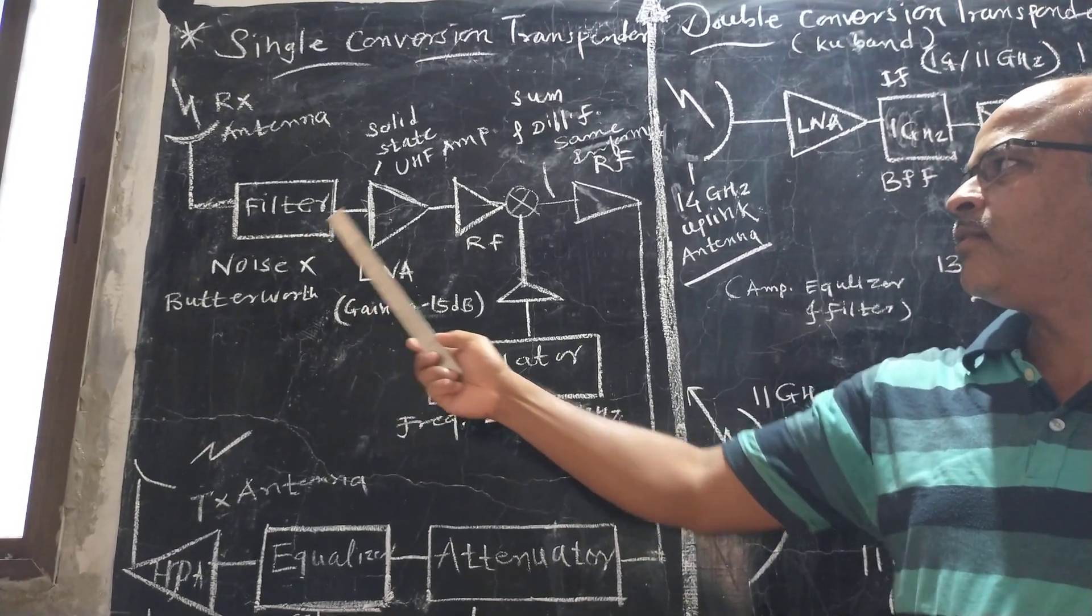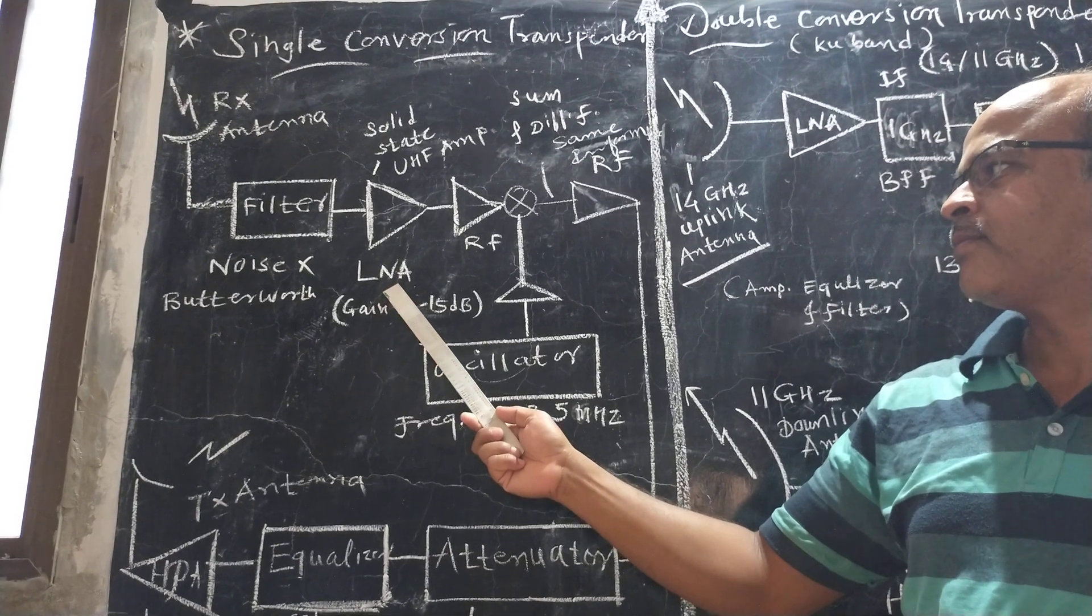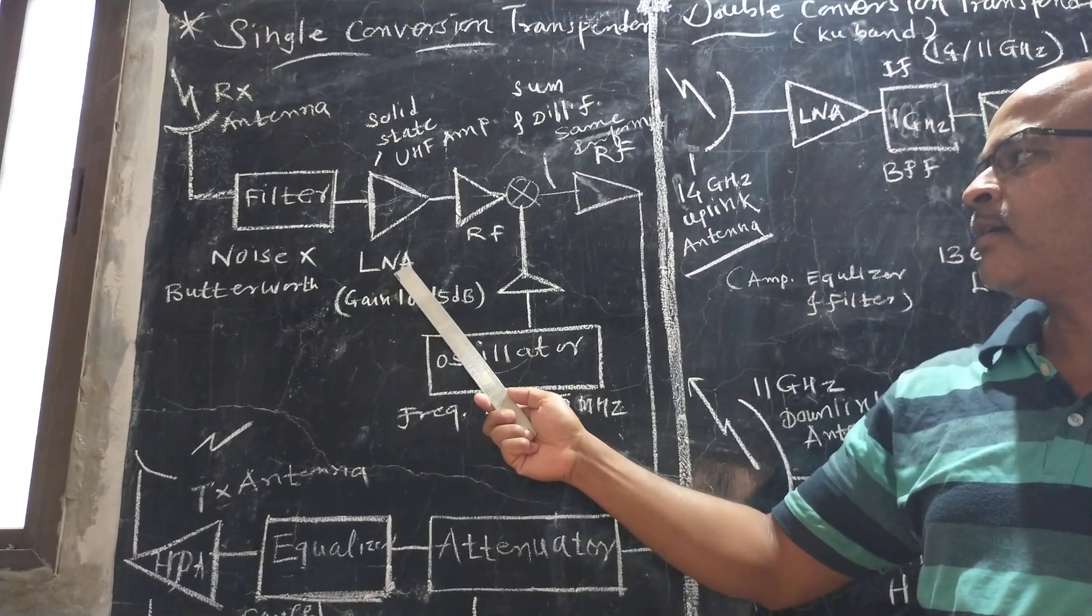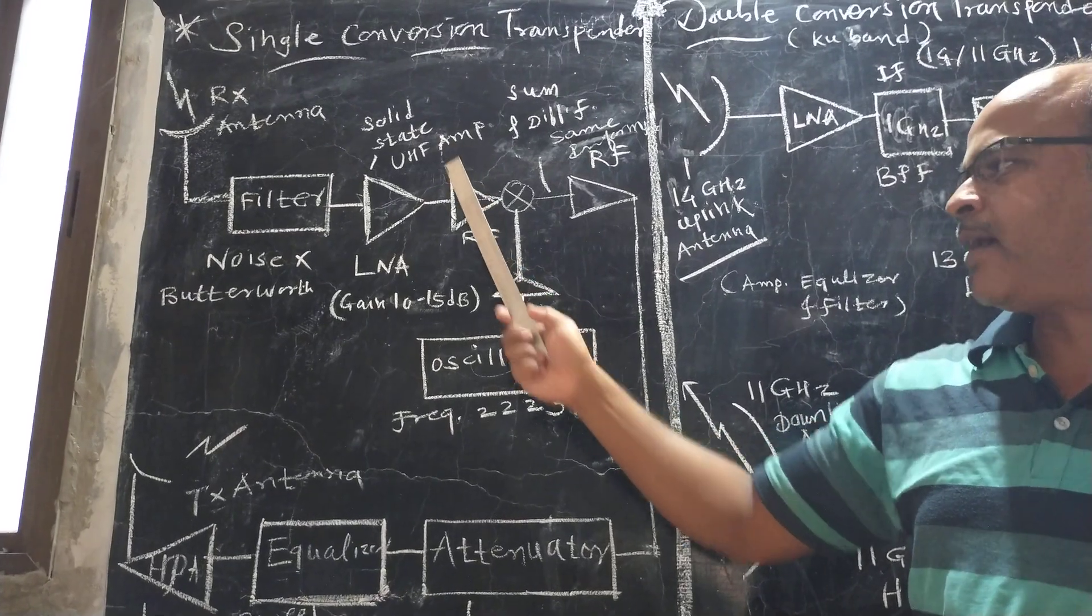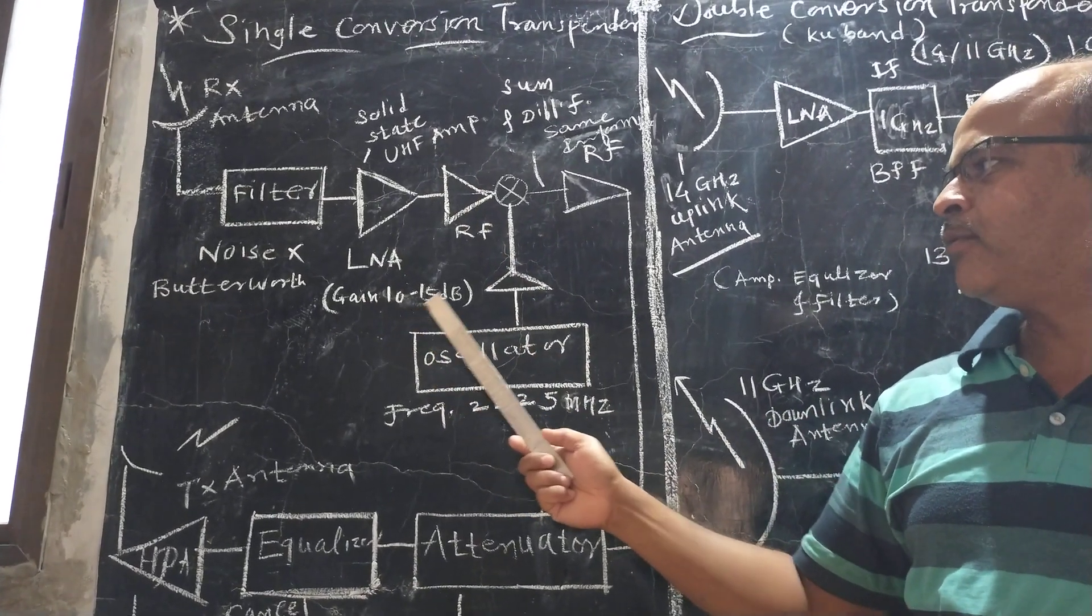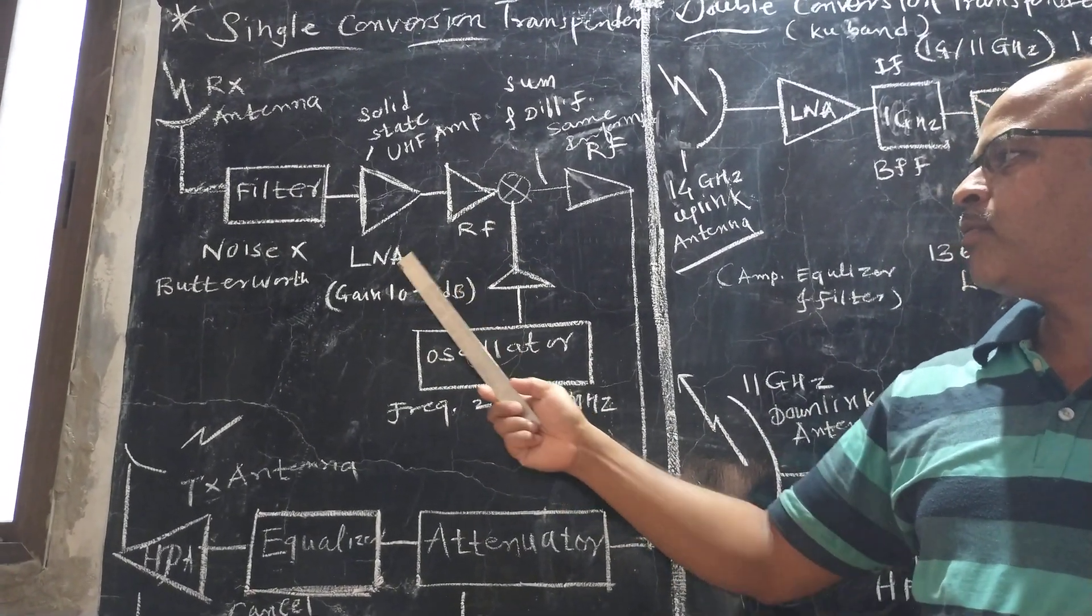The filter output is given to the low noise amplifier. This low noise amplifier is basically a solid state microwave amplifier having a gain of 10 to 15 dB.